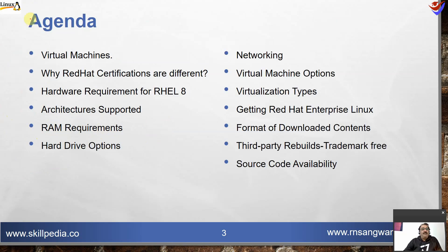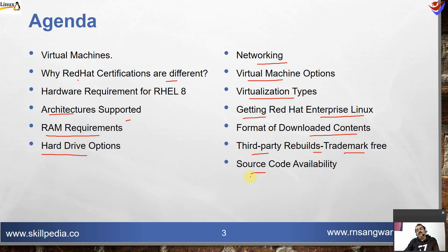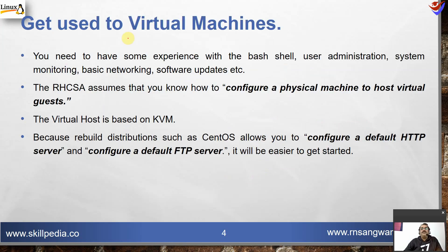The agenda of this session covers virtual machines, why Red Hat certifications are different, supported architectures, RAM requirements, hard drive options, networking, virtual machine options, virtualization types, getting Red Hat Enterprise Linux, format of downloaded content, third-party rebuilds which are trademark-free, and source code availability for RHEL8, because ultimately it is open source.